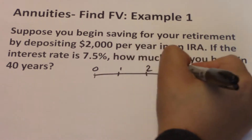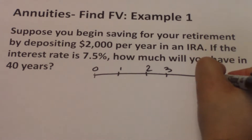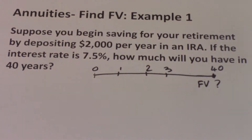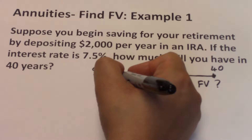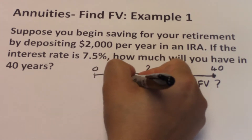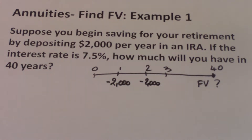So on a timeline: 0, 1, 2, 3, and so on until year 40. You want to know the future value at year 40. You deposit each period $2,000, and I'm going to input it as a negative number because you are making those deposits — they cost you, taking money from your paycheck and putting it into the IRA account, which is a cash outflow. You're hoping to have a large sum at the end of 40 years, which would be your cash inflow.